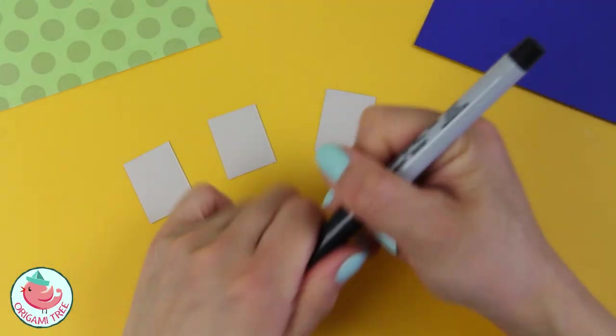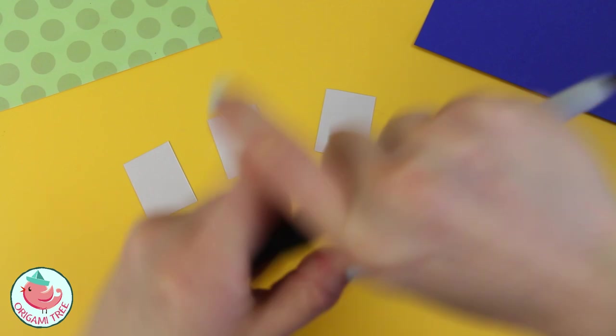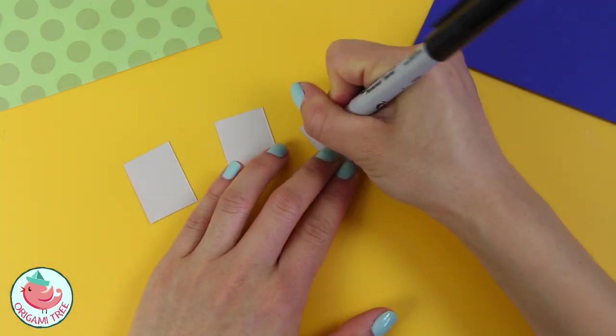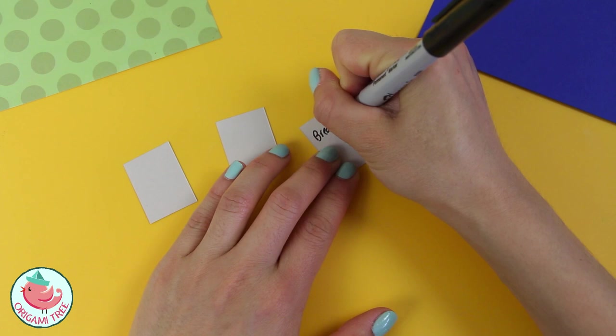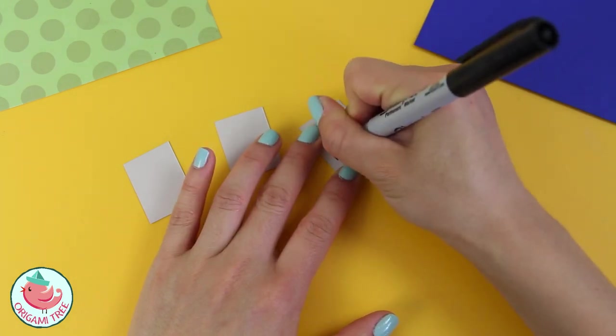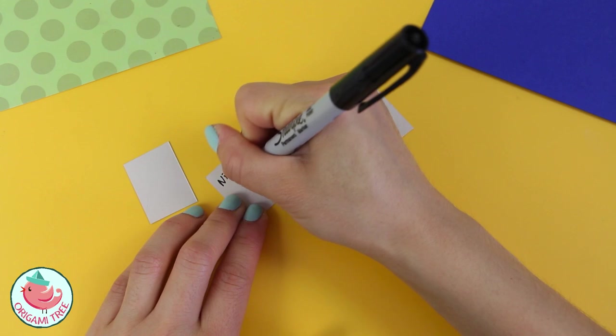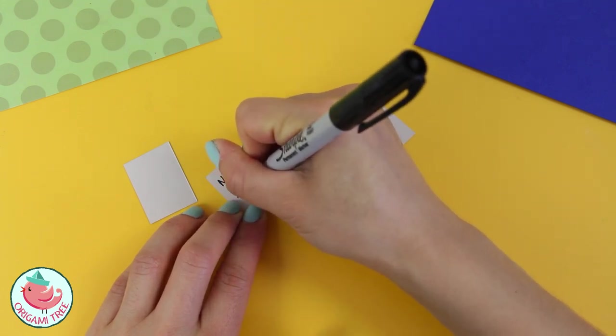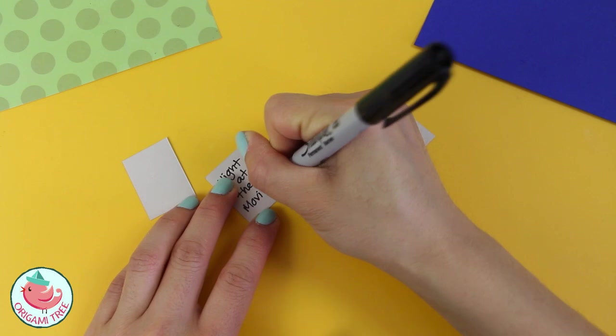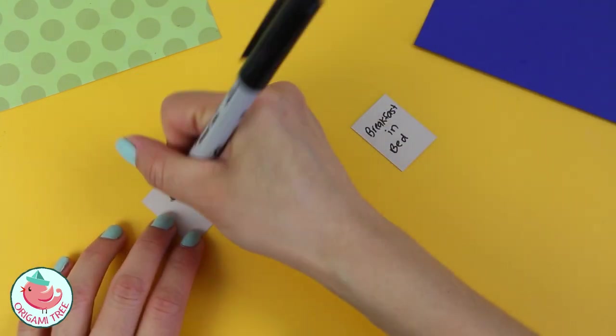First, I'm going to write my hidden message on the small cardstock, so it can be whatever prize you want to give your dad. So this one I'm going to write breakfast in bed, night at the movies, and maybe car wash.